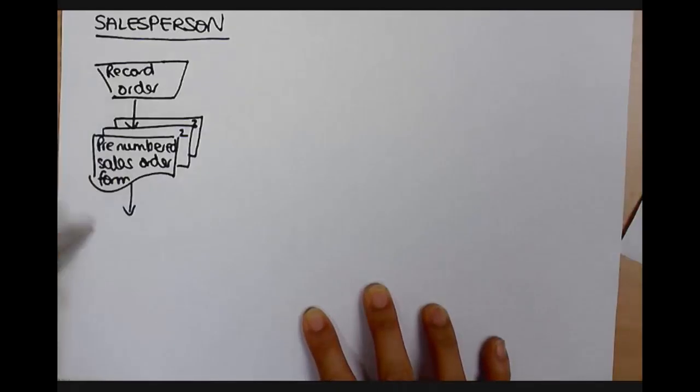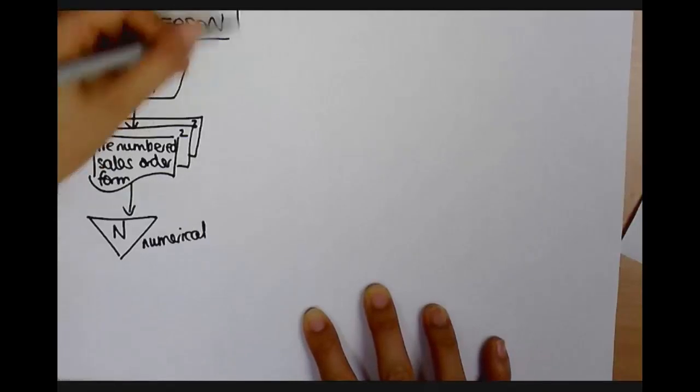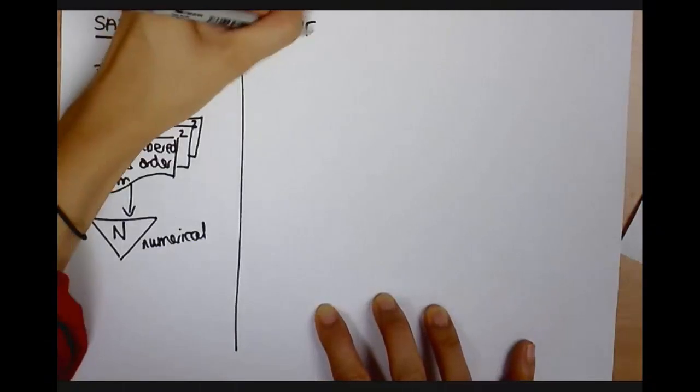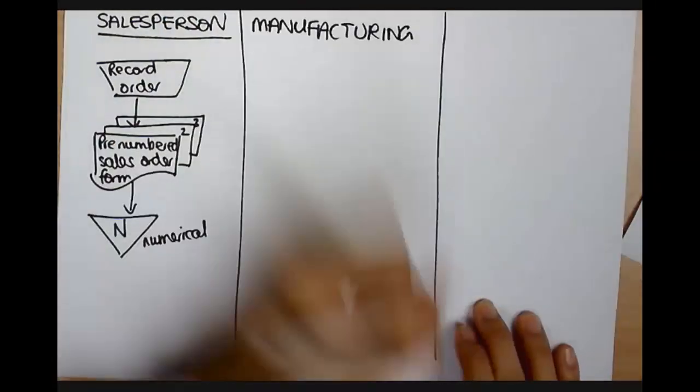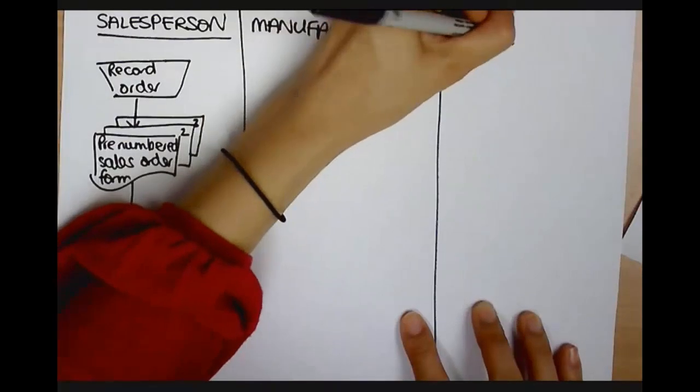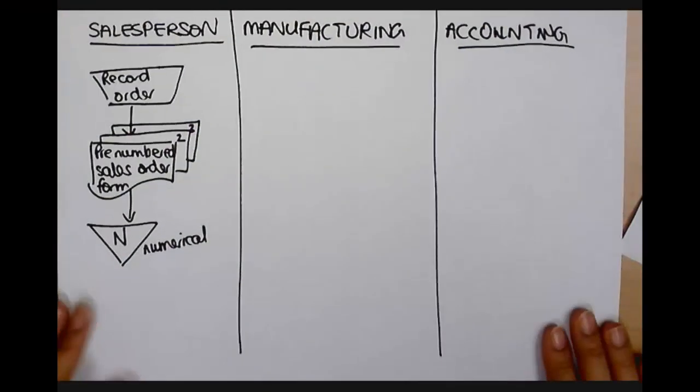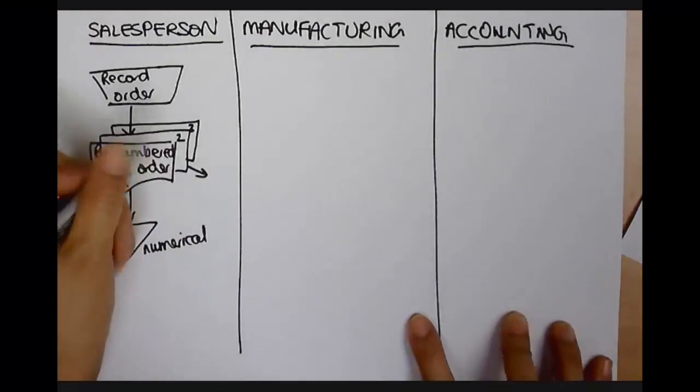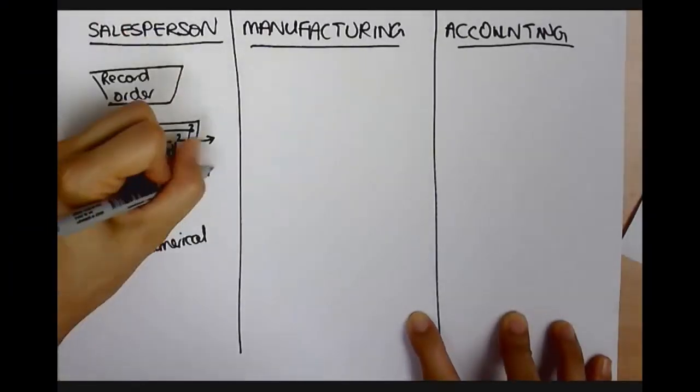Alright, so she keeps one in a file. Now I'm going to assume here that that file is numerical. Alright, because they are pre-numbered. Okay, so we've got the manufacturing department. And we've also got the accounting department. Okay, so we've got those two departments. And I know that one copy goes across to accounting, and one copy goes to manufacturing.